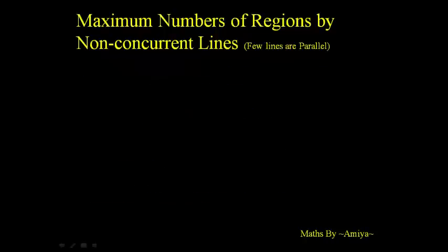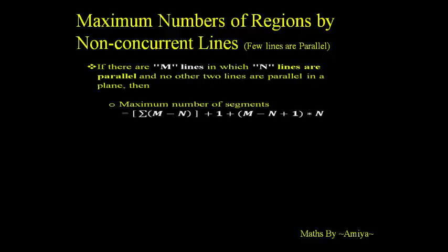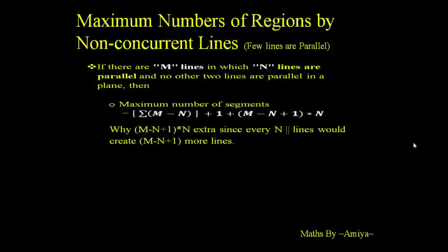The most important case is the maximum number of regions by non-concurrent lines in which few lines are parallel. If there are m lines of which n lines are parallel and no other two lines are parallel, then first work on the non-parallel lines using σ(m−n) + 1. Then for the n parallel lines, each parallel line creates (number of old lines + 1) new regions — that is, m−n+1 new regions per parallel line.